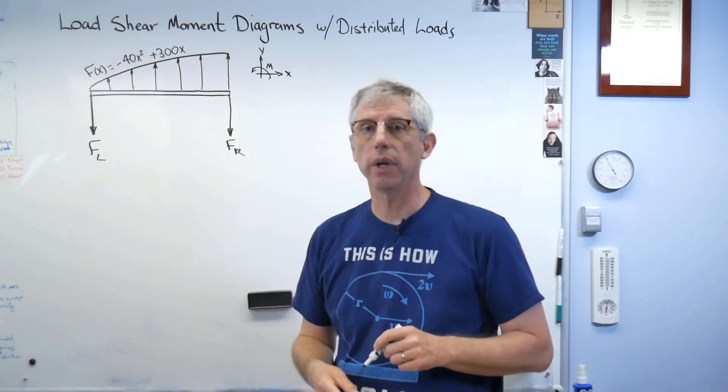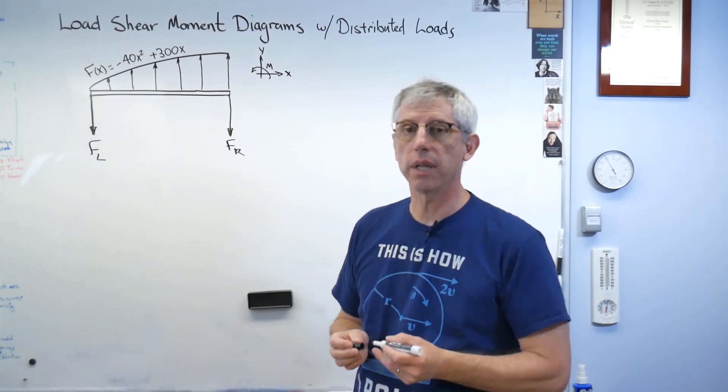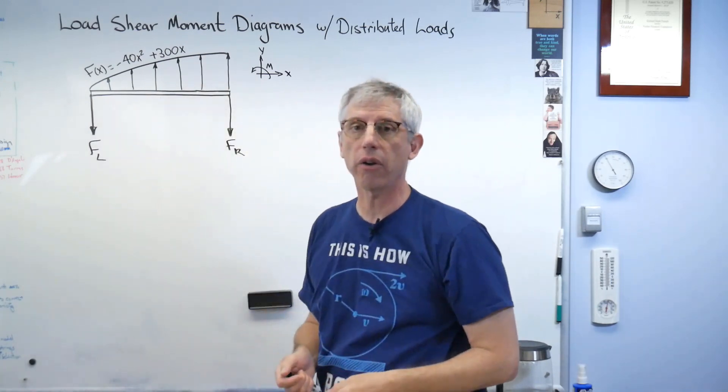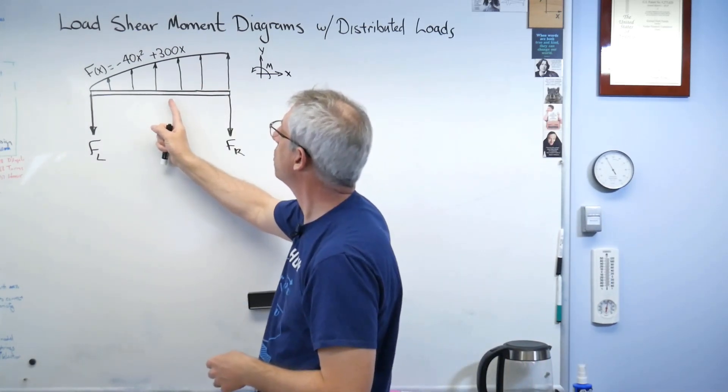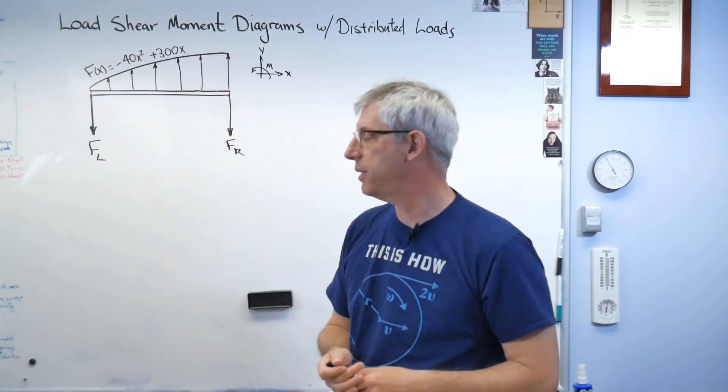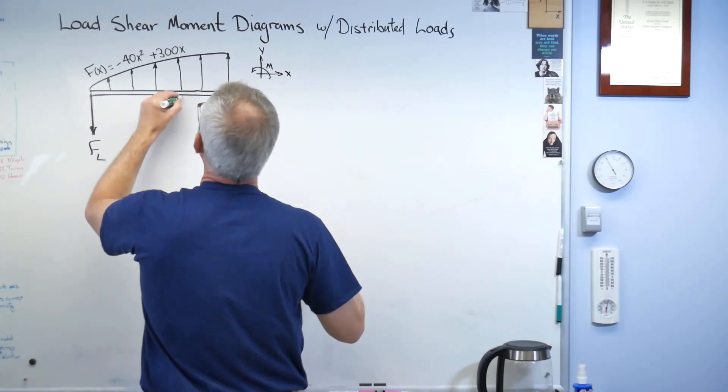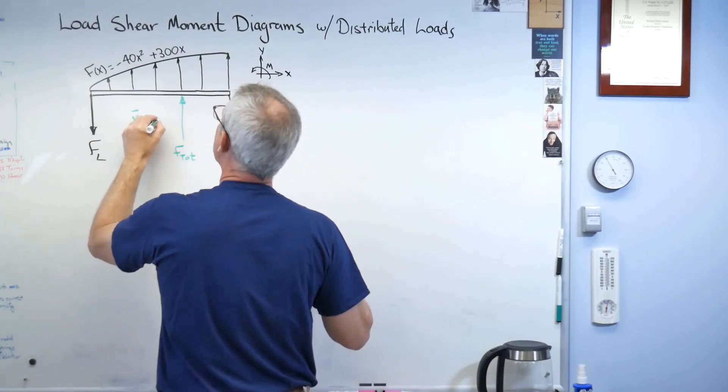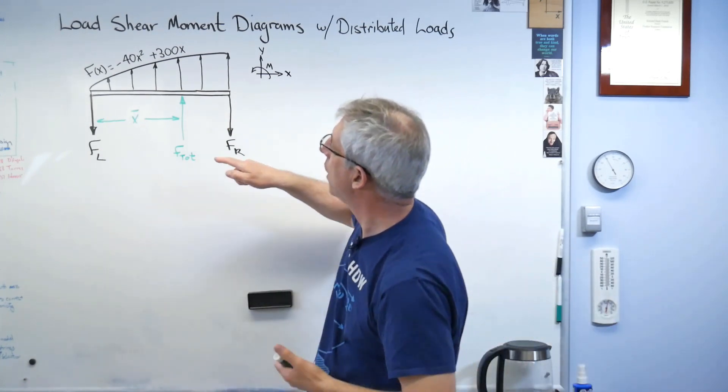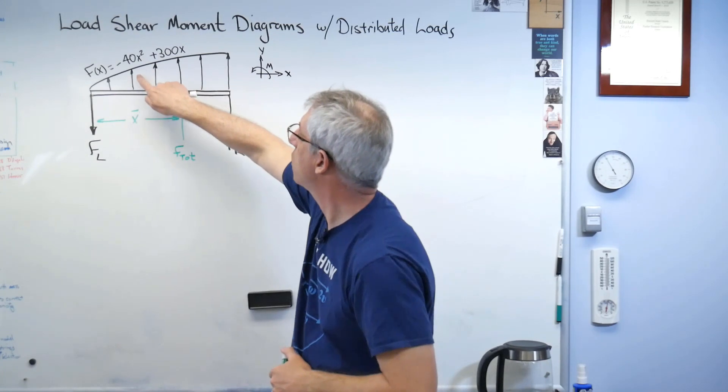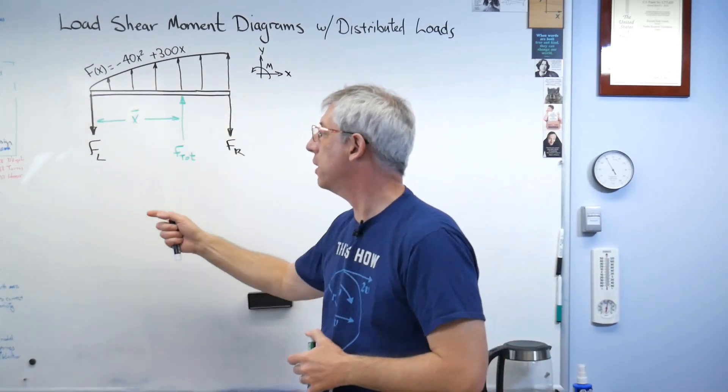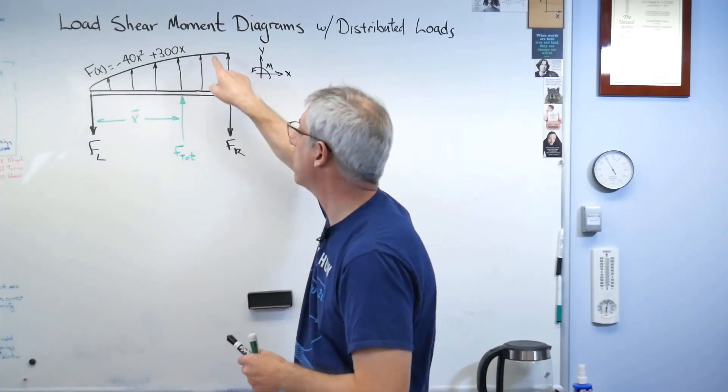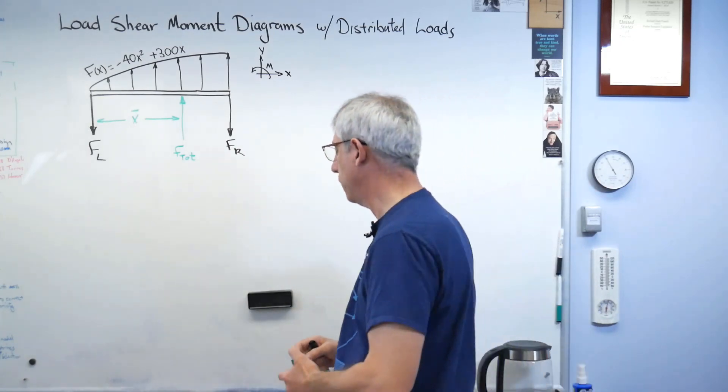Now, in order to deal with the distributed load, to find those forces, I can concentrate that load at the centroid of that area there. So the total load is going to be the integral from this end to this end, just the area under that curve. And to figure out where to put that, I also have to find the x location of the centroid of that shape. Well, it turns out that's not too hard. Let's draw our concentrated load here. That'll be F total. I'll replace that with a number here in a second. And there's x bar.